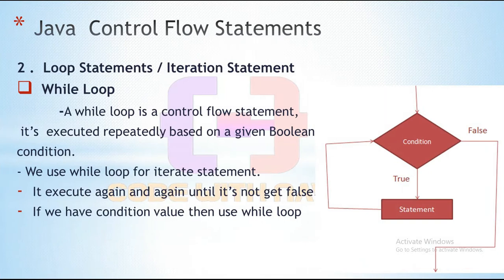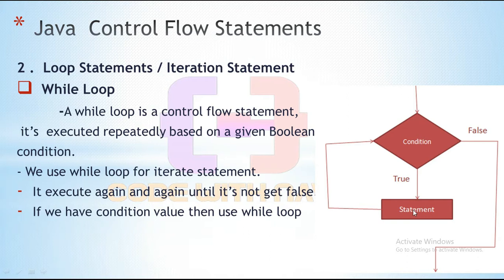Let's first understand what is a while loop. A while loop is a control flow statement. It is executed repeatedly based on a given Boolean condition. We use a while loop to iterate statements — it executes again and again until the condition becomes false. If you have a condition value, then use a while loop. If a condition is true, then control goes into the statement and executes that statement.